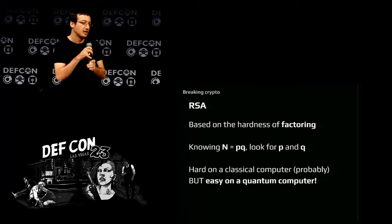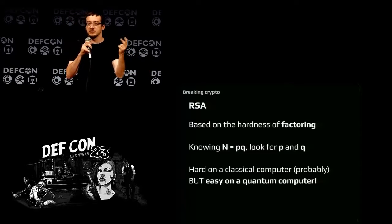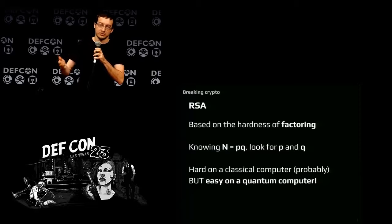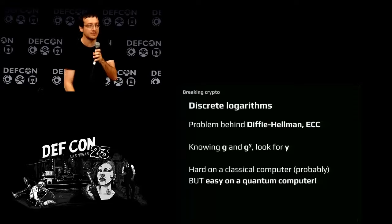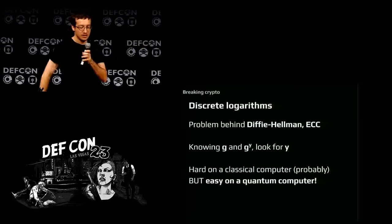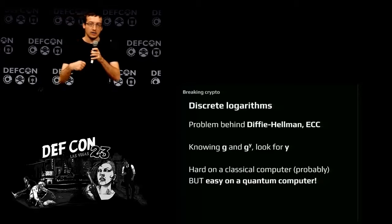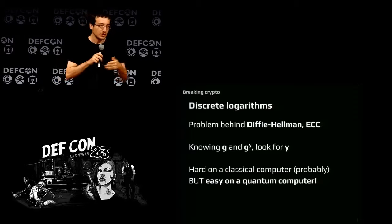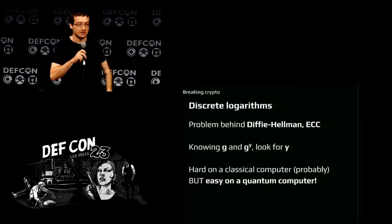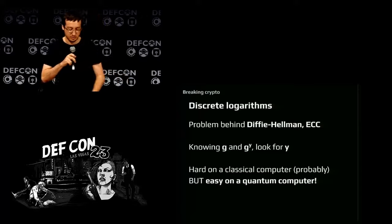Shor's algorithm isn't specific to factoring — it solves a whole class called the hidden subgroup problem: finding a subgroup within a bigger group. It turns out that the discrete logarithm is another instance of this problem — the problem behind Diffie-Hellman key agreement and elliptic curves. The problem is essentially: you have a generator G, you know G to the power of Y, and you don't know Y. It sounds simple but is hard for big numbers classically. It's easy on a quantum computer.